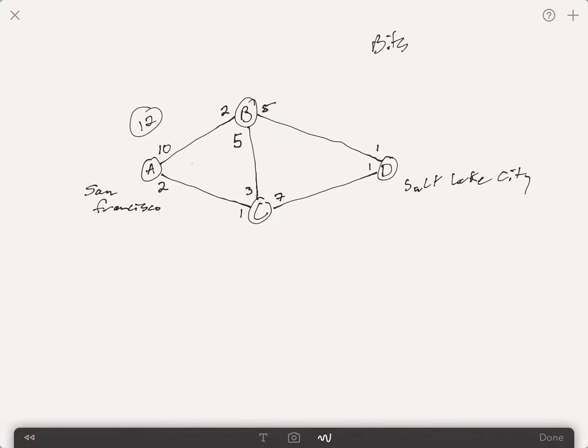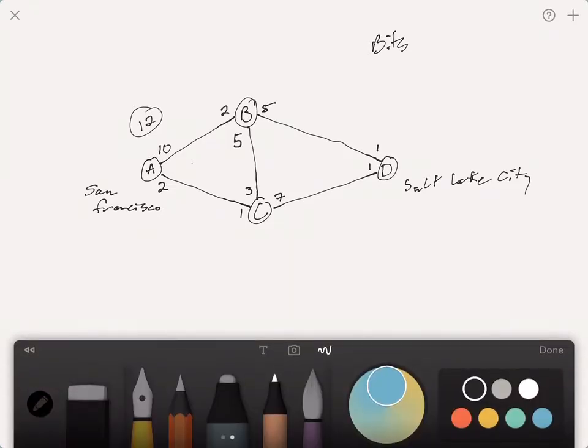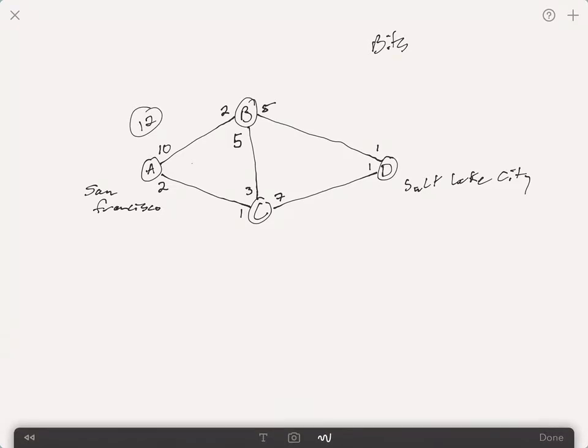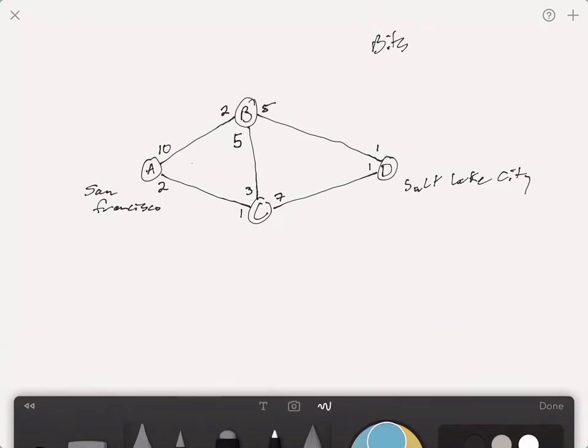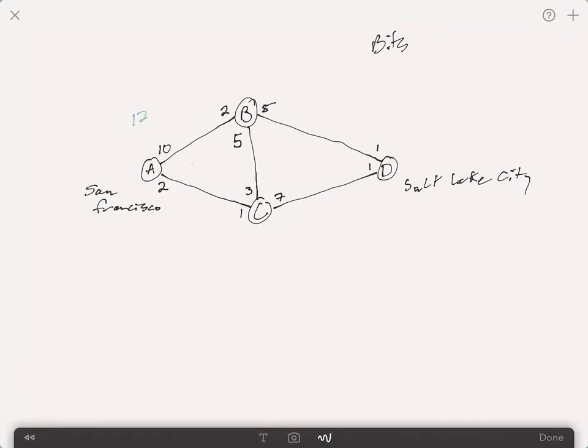So we've got 12 coming out of point A, 10 coming up here to point B. Well, point B, the only ways you can get from point B to point D are either going through C and then through D, or just directly to D.